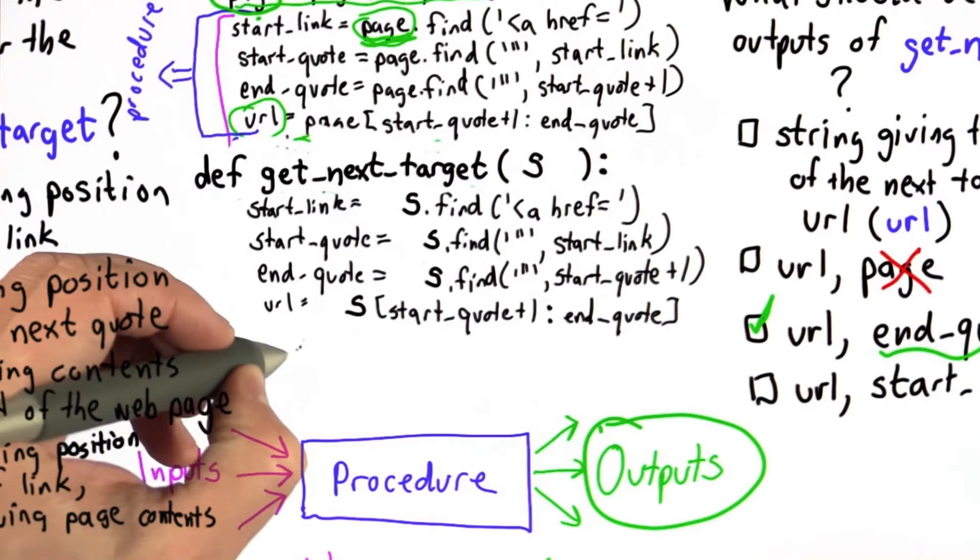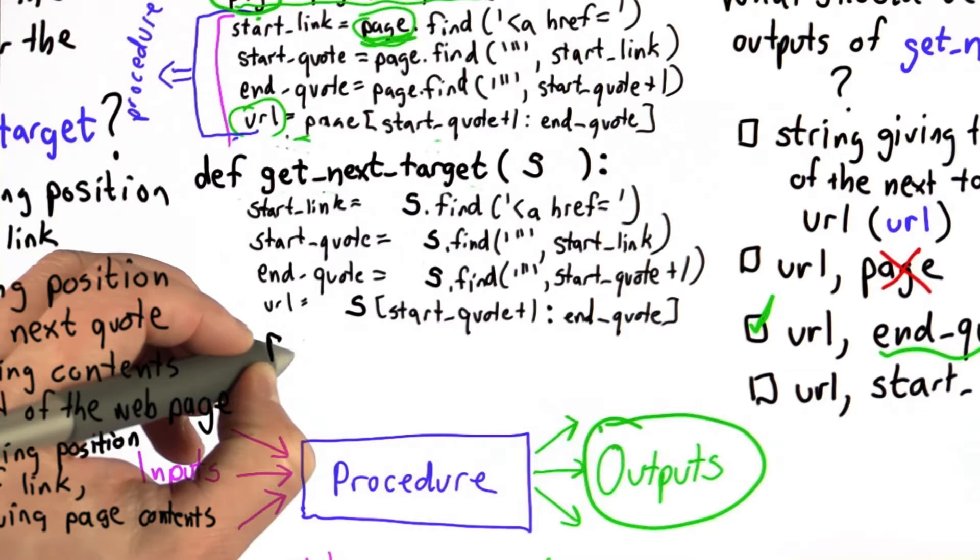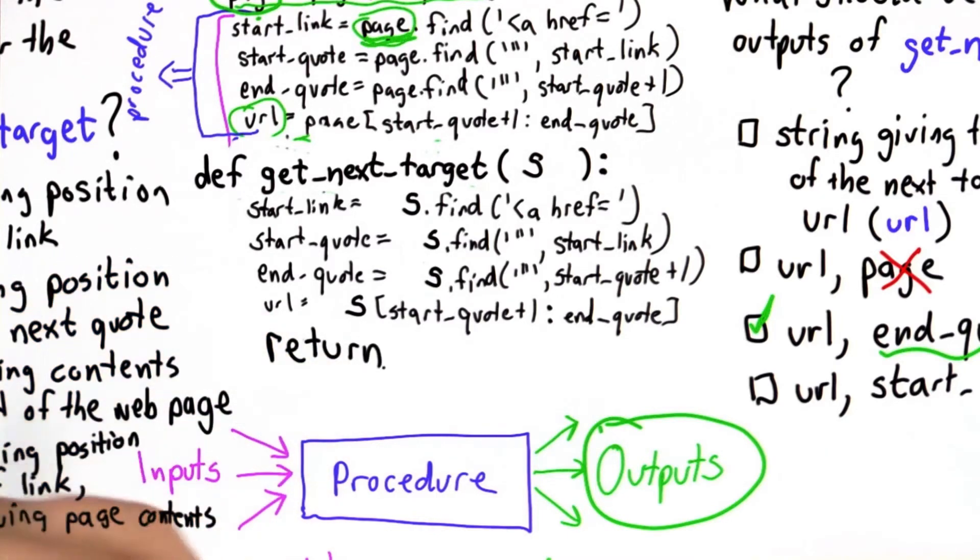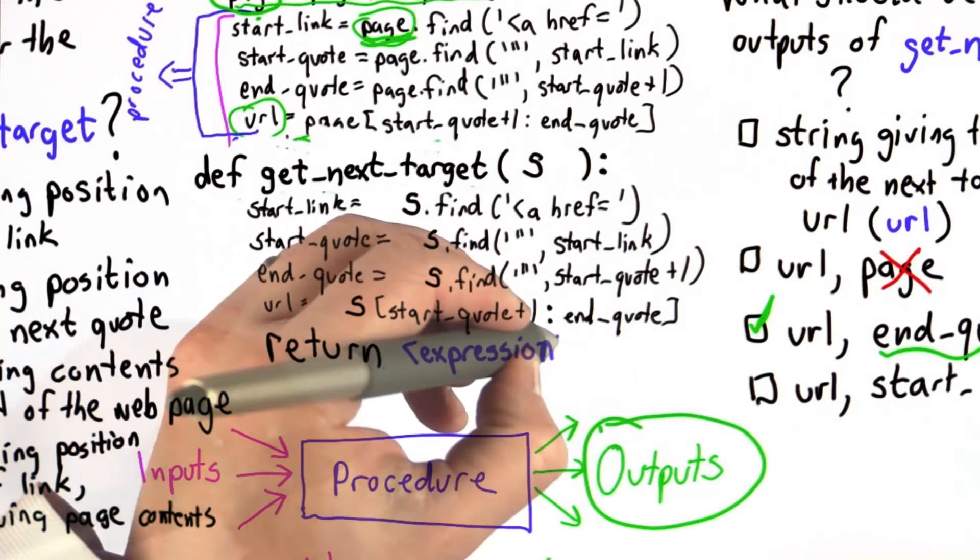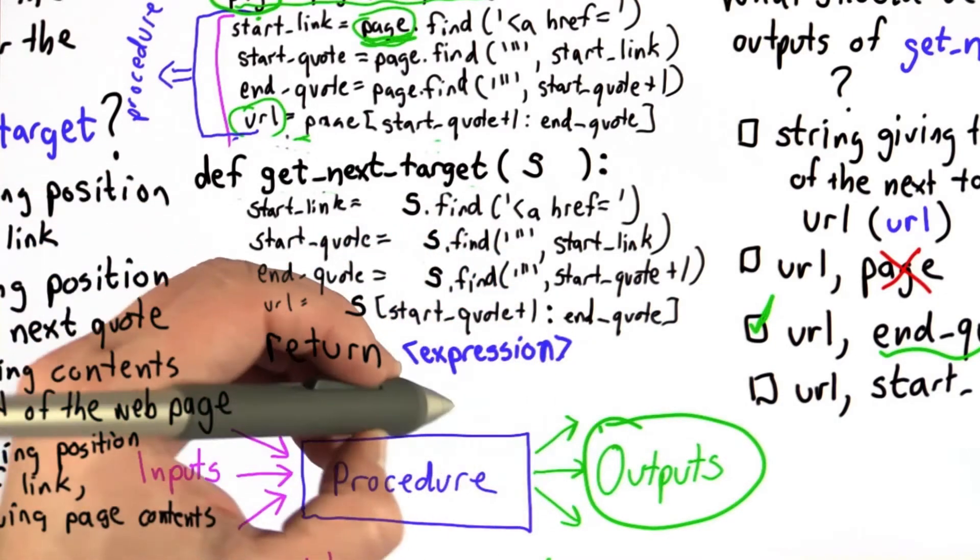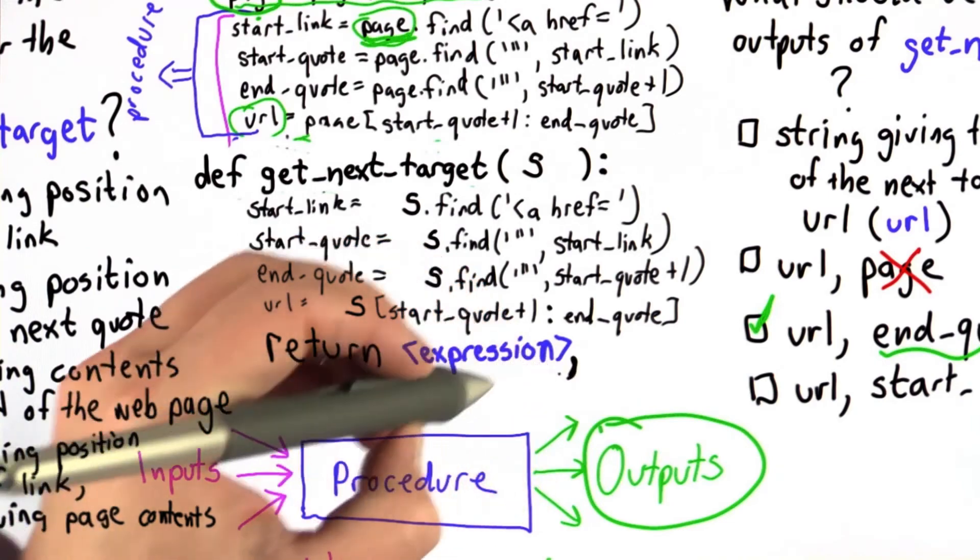Return's a special construct in Python. So we have the keyword return, followed by a list of all the things that we want to return from the procedure. So what we return is a list of any number of expressions, separated by commas.